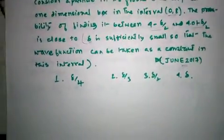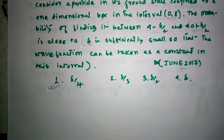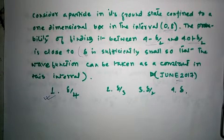This is the probability. So the correct answer will be delta by 4. Thank you guys, please subscribe to our channel for more videos from quantum chemistry and physical chemistry. If you have any doubts, comment below.